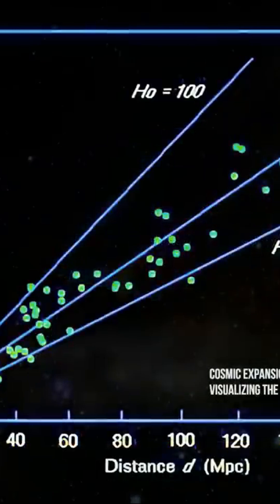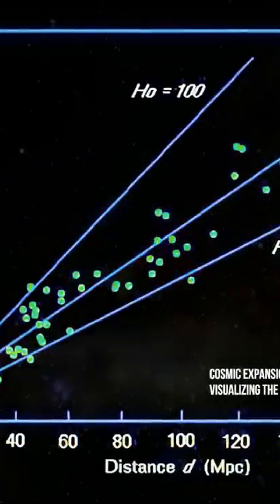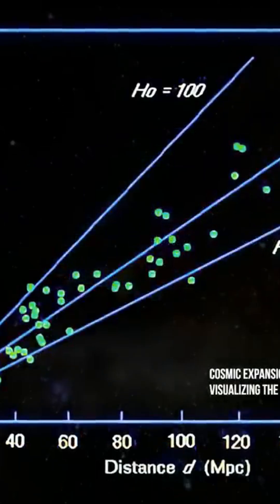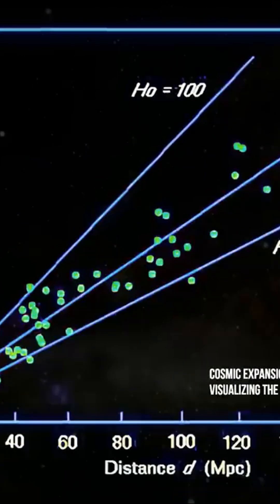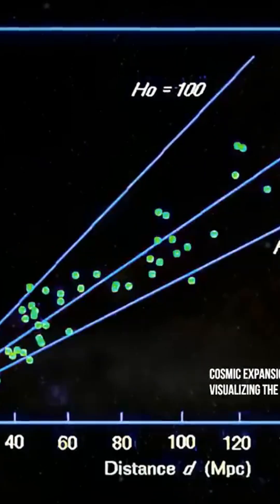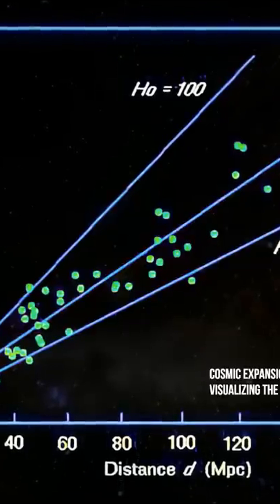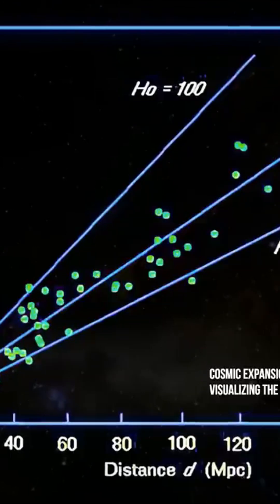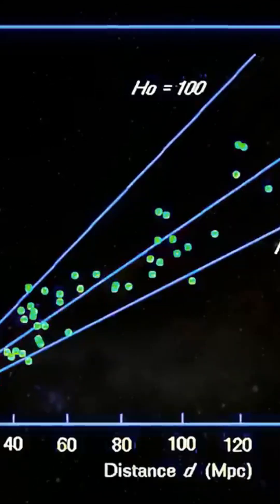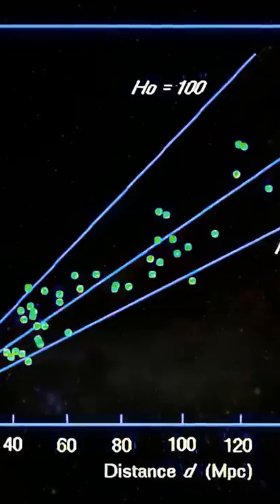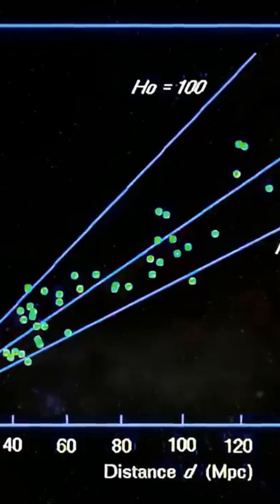...approximate value of 70 kilometers per second per megaparsec means that on average, for every megaparsec of distance separating two points in the universe, these points are moving away from each other at a speed of around 70 kilometers per second, or 43 miles per second.